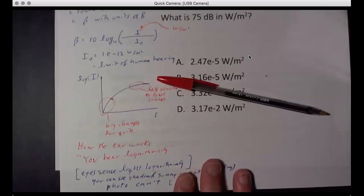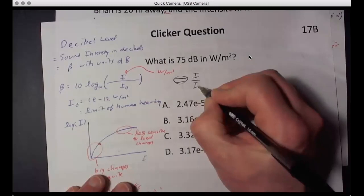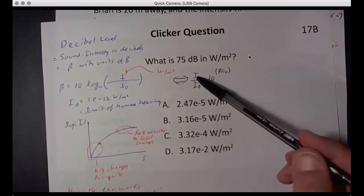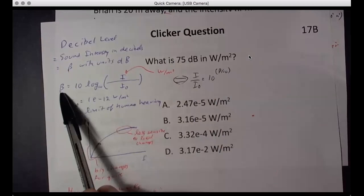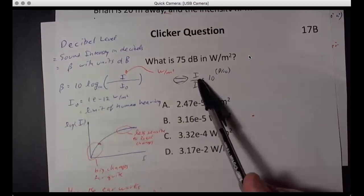Going in the other direction: I/I₀ = 10^(β/10). So if you have the dB level and want I, you use this form. If you have I and want dB, you use the log formula. For those who know enough math: to get rid of a log, you take 10 to both sides, which gives you 10^(β/10) = I/I₀. That's how you derive this inverse relation.